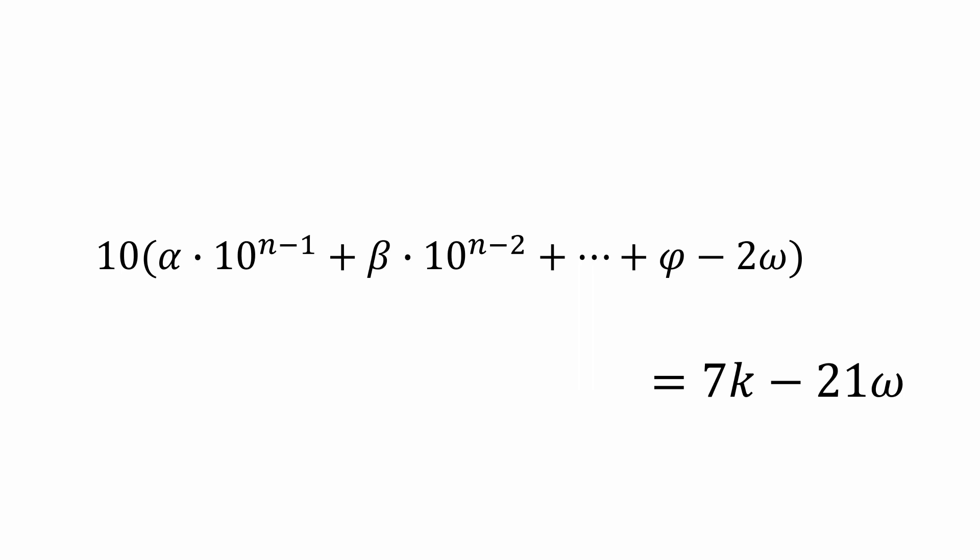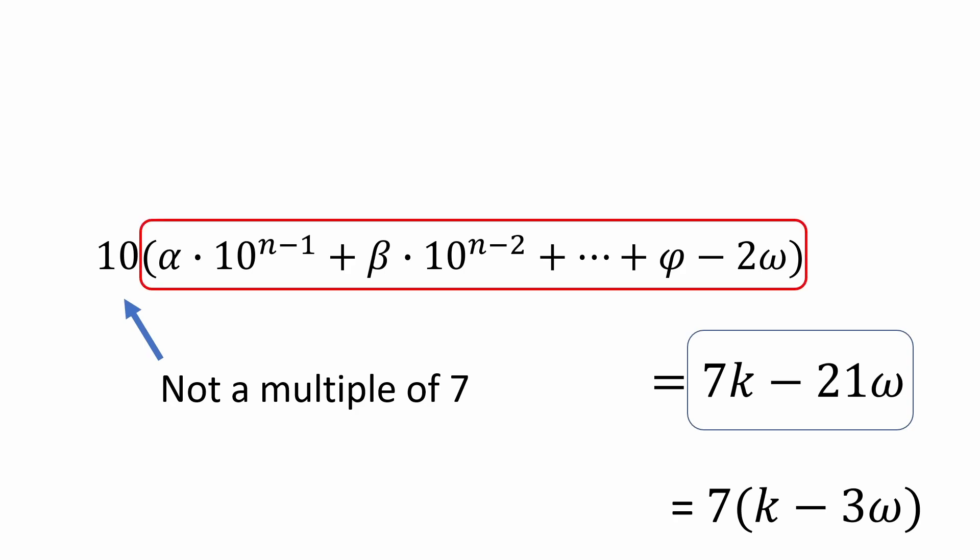Now here's the cool part that shows how divisibility by 7 really works. We know the right side is a multiple of 7, since I can rewrite it as 7 times k minus 3 omega. What about the left side? Well, 10 isn't a multiple of 7, so the only way the number can be a multiple of 7 is that the remaining factor, boxed in red, is a multiple of 7.